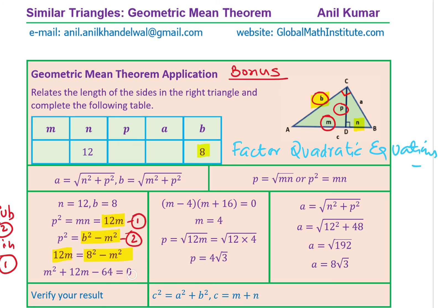We can use the quadratic formula, but factoring also works: the product is minus 64 and the sum is 12, so 16 and minus 4 work. We factor as (M minus 4)(M plus 16) equals 0, giving M equals 4 or M equals minus 16. Since side lengths must be greater than zero, M equals 4. Now substituting into P squared equals 12M: P squared equals 48, so P equals the square root of 48 equals 4 square root 3.